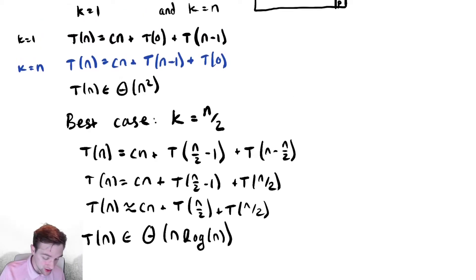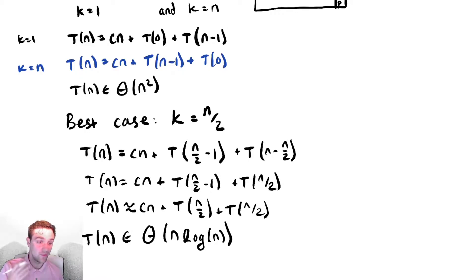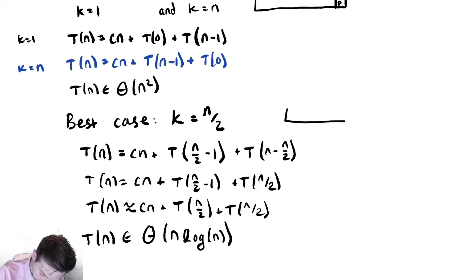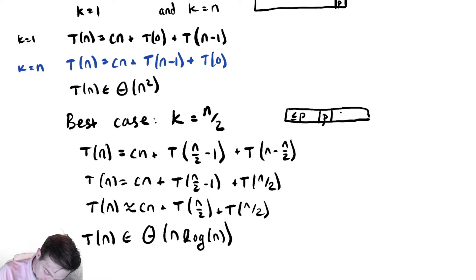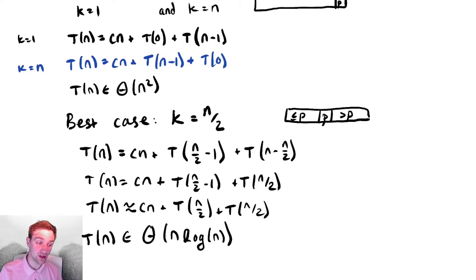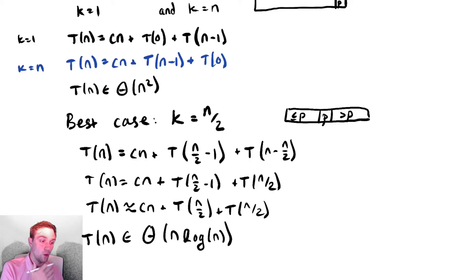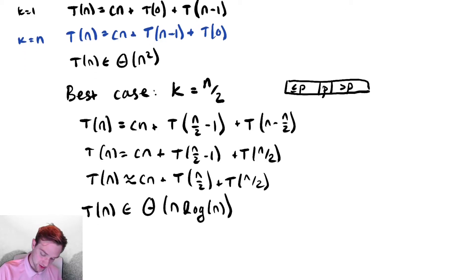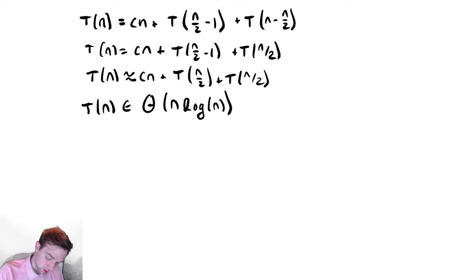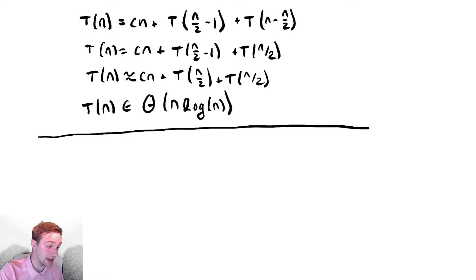Our best case and worst case are quantitatively different asymptotically, and functionally different in terms of what's happening. This problem should look familiar to previous examples where a random number appeared within the recursive call. For those problems, we used conditional probability. So let's set that up — we want to use conditional probability, and we'll draw a number line for our random variable k, similar to those previous problems.